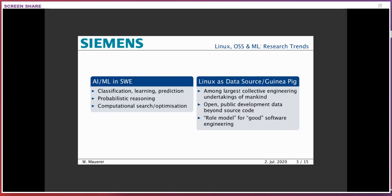Research in these three areas very often is based on Linux as a data source — or if you want to call it that way, as a guinea pig — because it's one of the largest known engineering undertakings mankind has so far produced. We have lots of open code and open development data that researchers can use and feed into their machine learning models, and the Linux kernel is considered a role model of good software engineering.